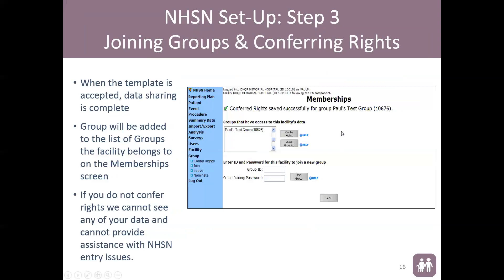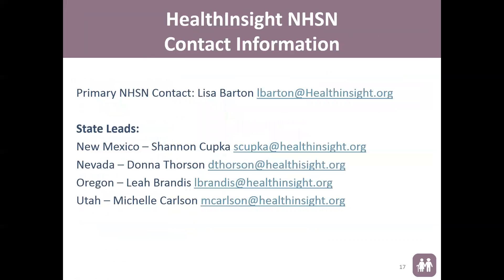After accepting, you'll be directed back to the Membership page, which will show the group you just joined. Repeat the exact same steps for the second group — enter the group ID, password, join group, and verify the confer rights settings. Once both groups are showing on the Membership page, that confirms you've successfully joined and conferred rights to both groups, completing the setup process.